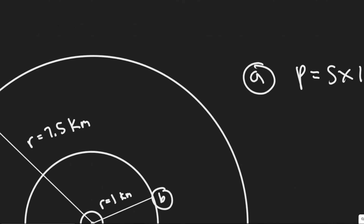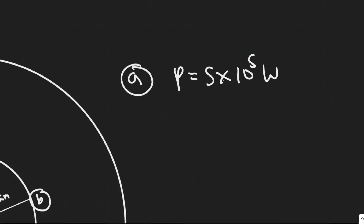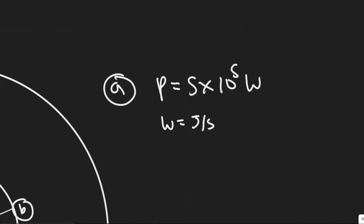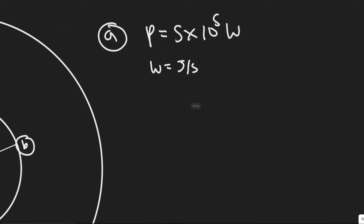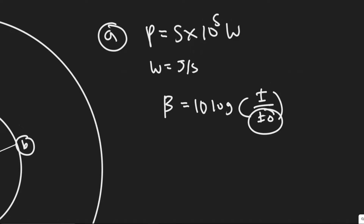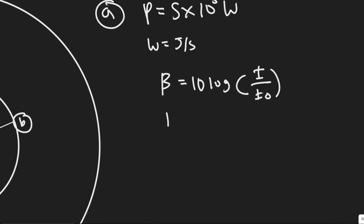What we're going to be finding for each of these is the sound level. We're given that the power in this problem is 5 times 10 to the 5 watts — they say joules of sound energy per second, and 1 watt is 1 joule per second, so that's the power. We're solving for sound level beta, which equals 10 log of I divided by I₀, where I₀ is the minimum audible intensity — a constant equal to 1 times 10 to the minus 12 watts per meter squared.